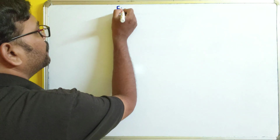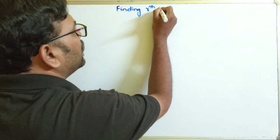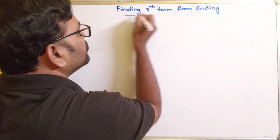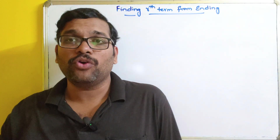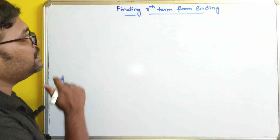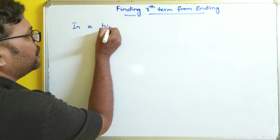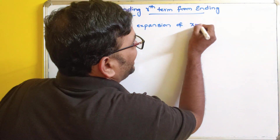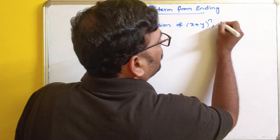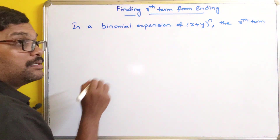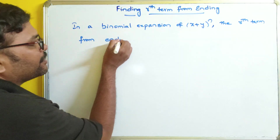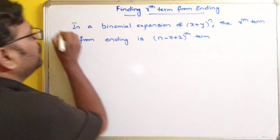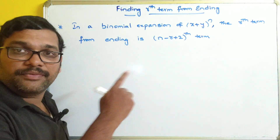So, finding the rth term from ending. After this we will also see how to find the coefficients of the terms. So let us take the formula: in a binomial expansion of (x + y)^n, the rth term from the ending is the (n - r + 2)th term from the beginning. This is the formula.